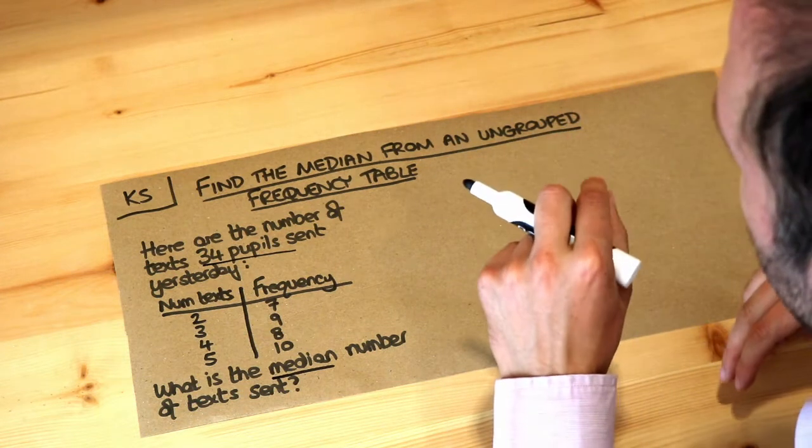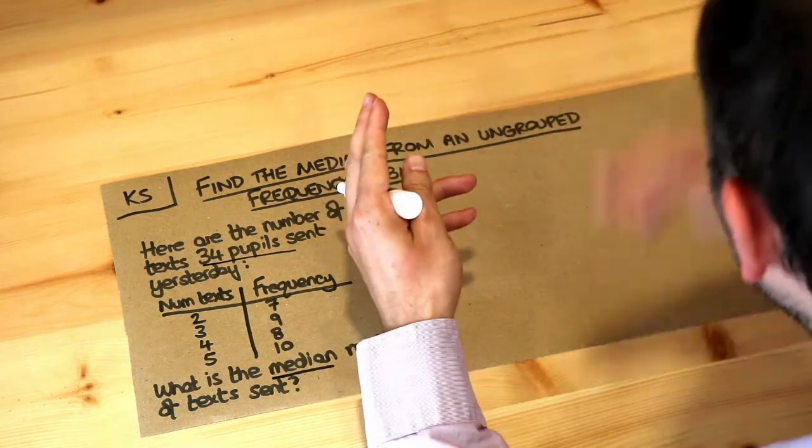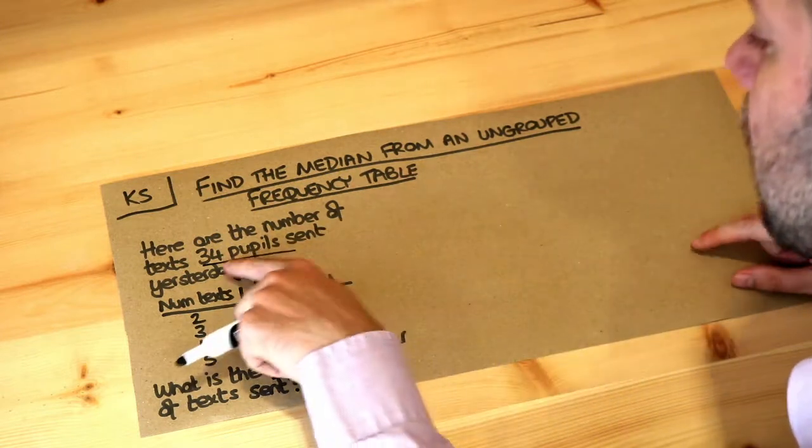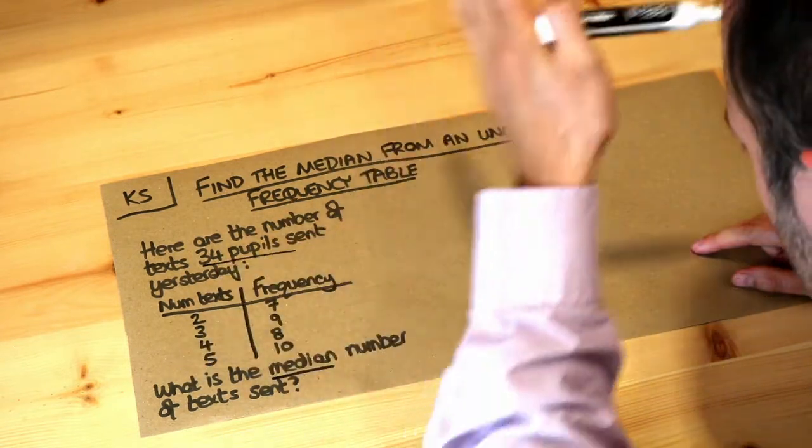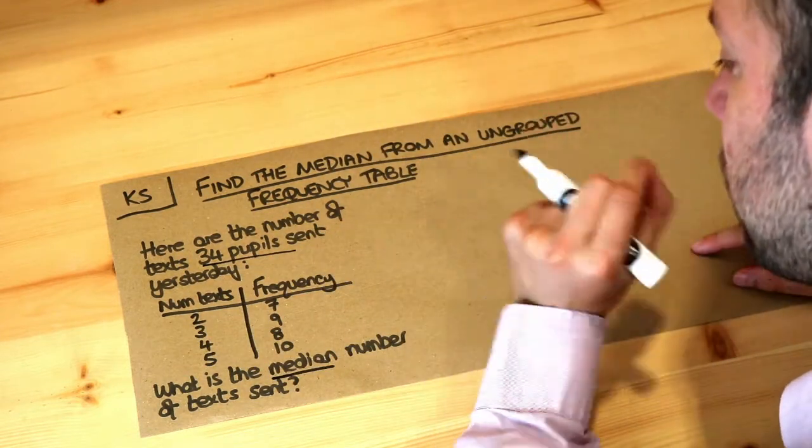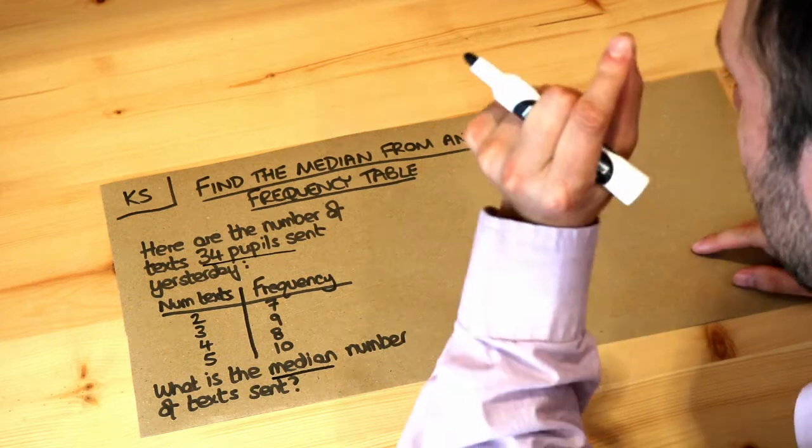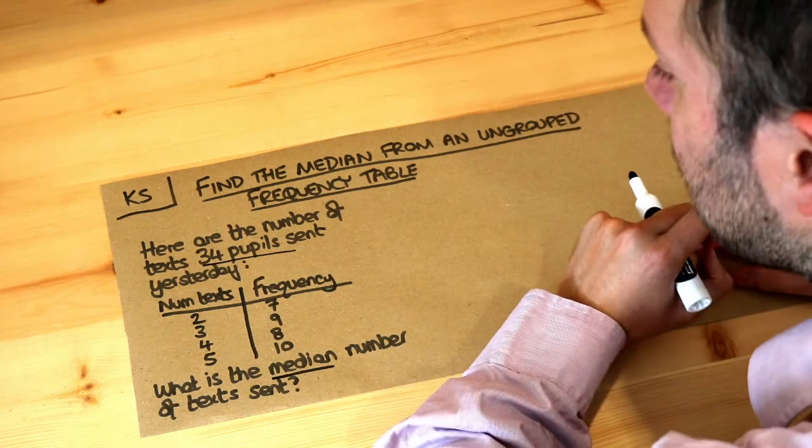Now I know there's a slight adjustment if it's an even number, you're kind of halfway between that one and the next one, but we probably don't need to worry about that. So just half the 34 to get the middle people. And we're interested in how many texts the middle people, the 17th people sent.